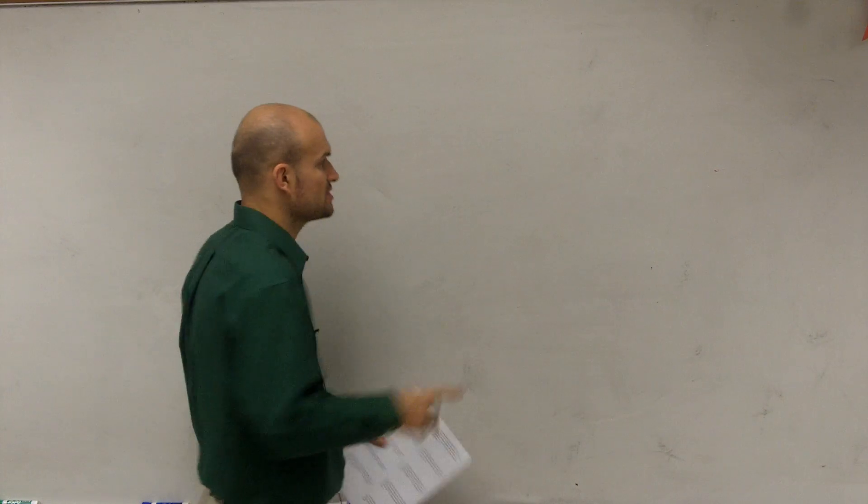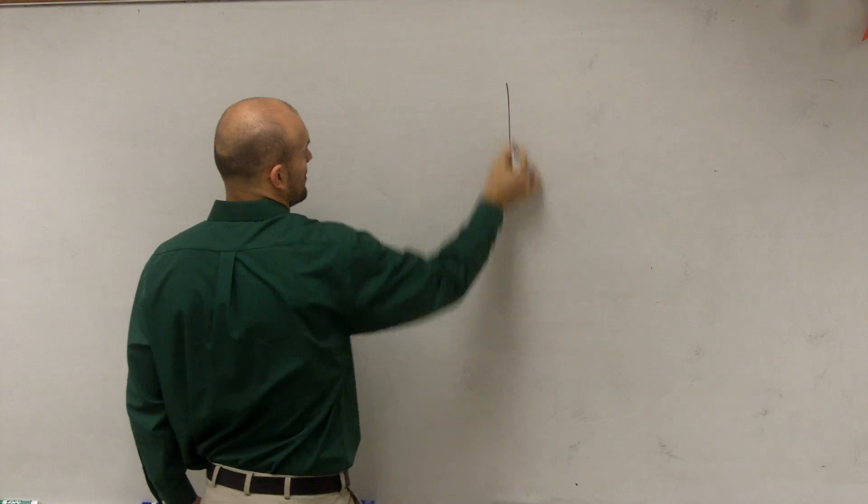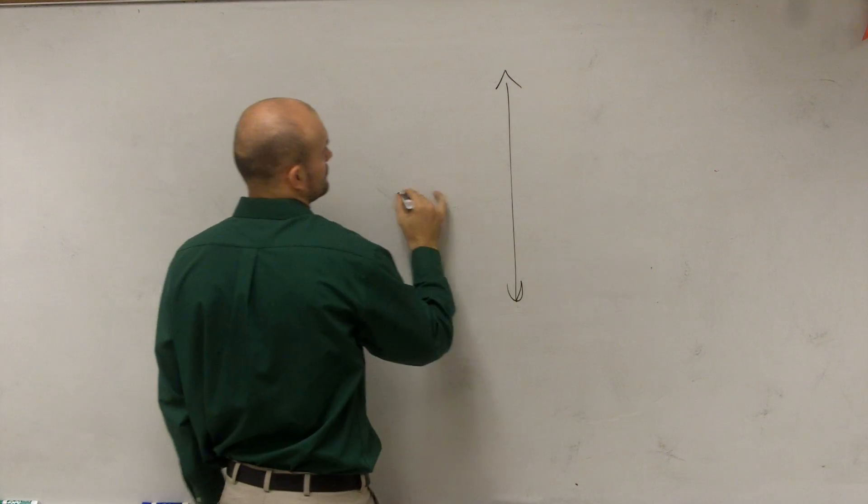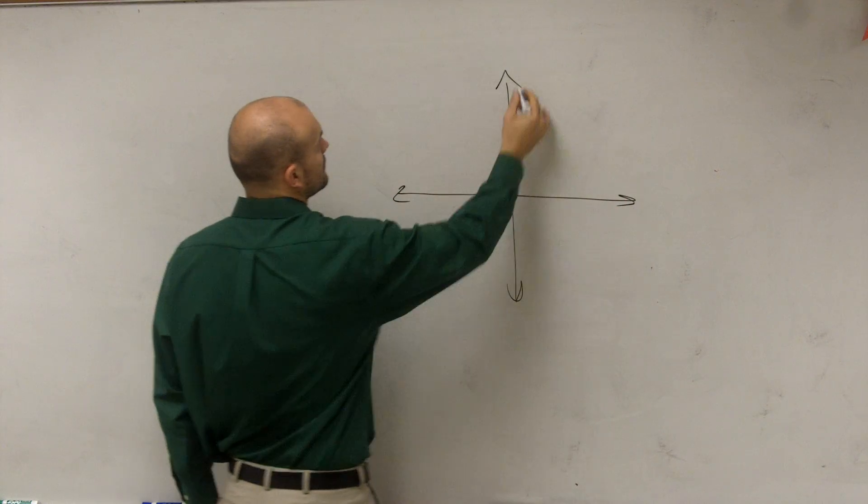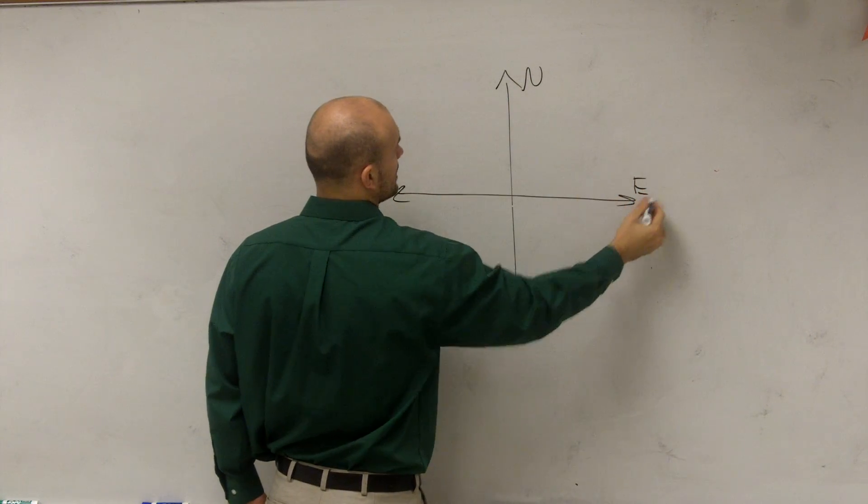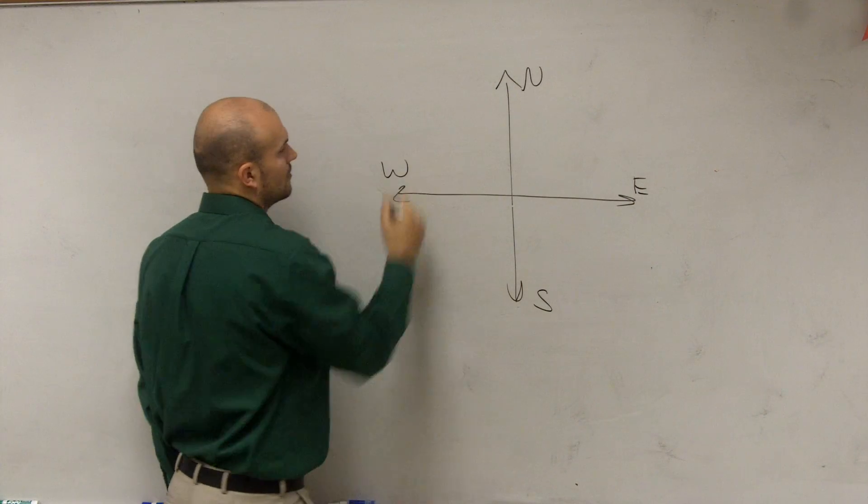So let's determine where south 15 degrees west is. We write up our map of bearings: north, east, south, west.